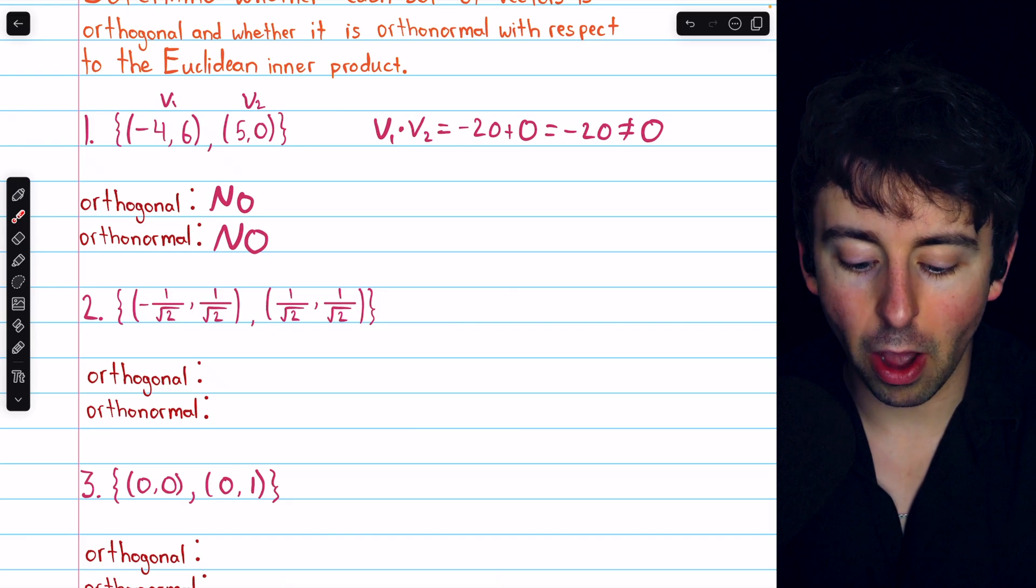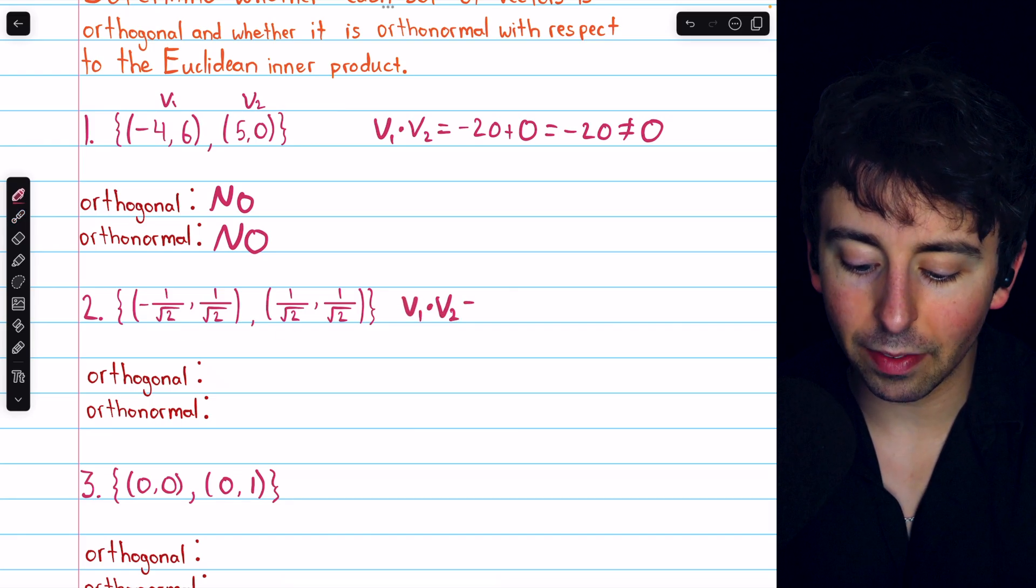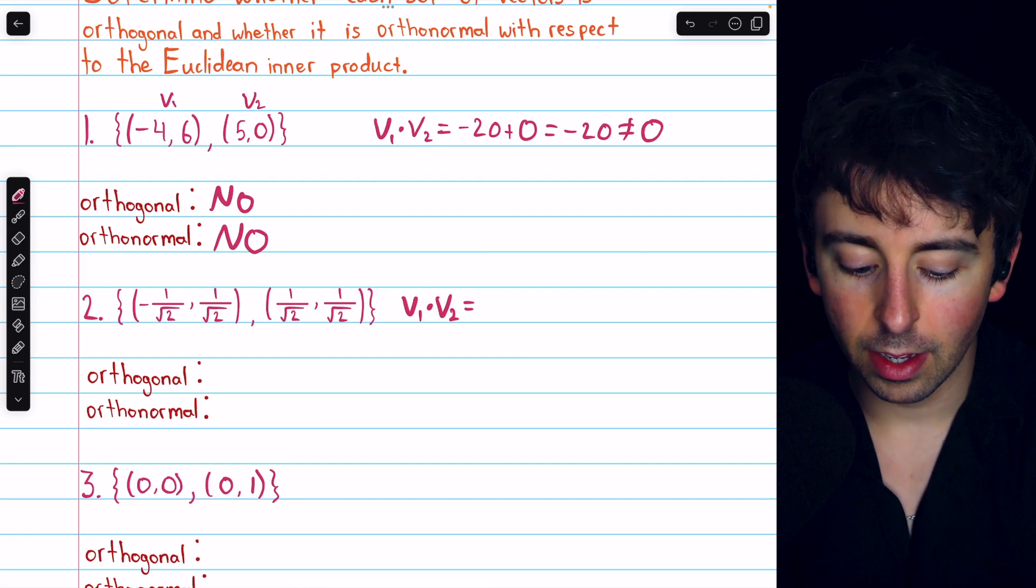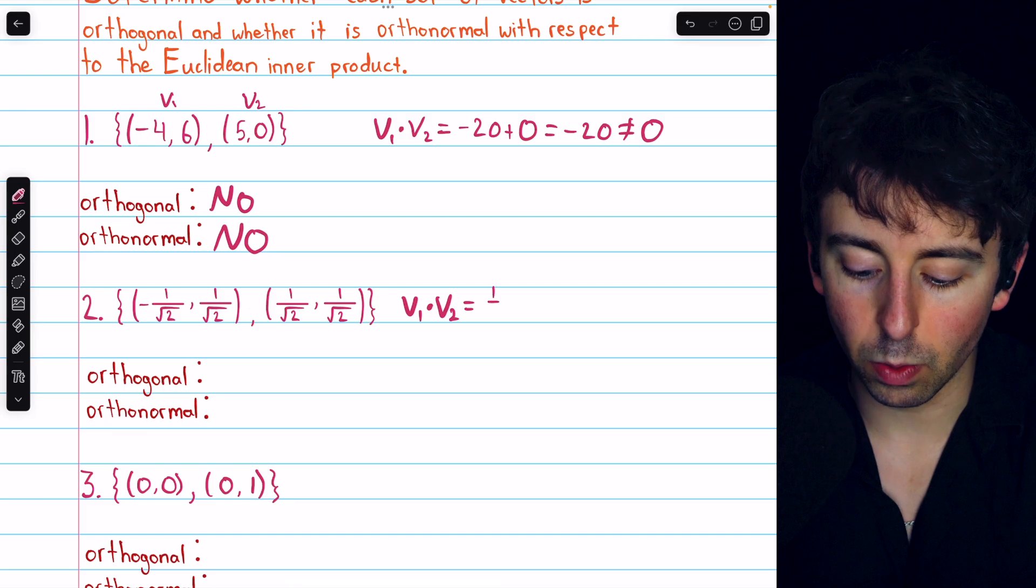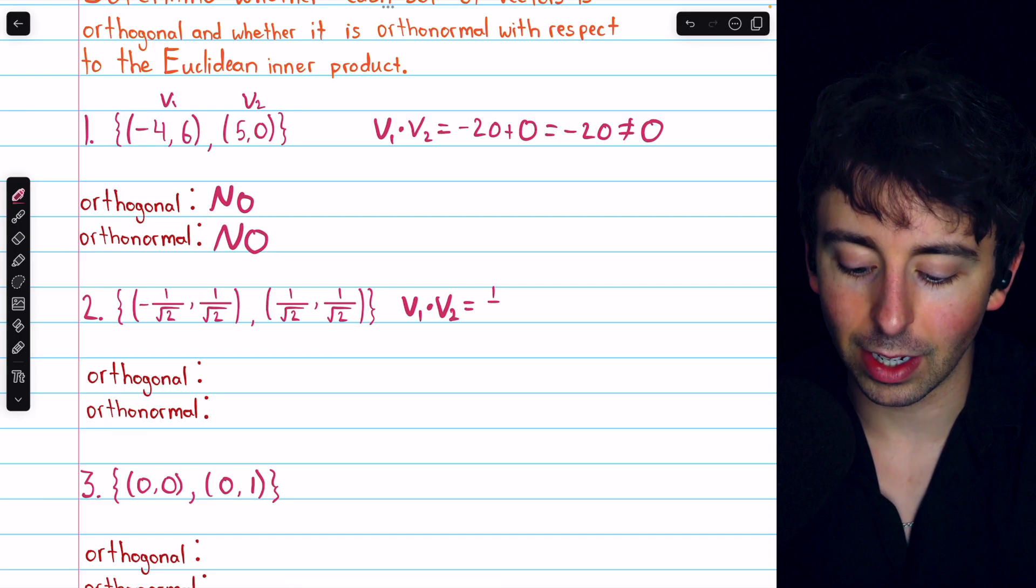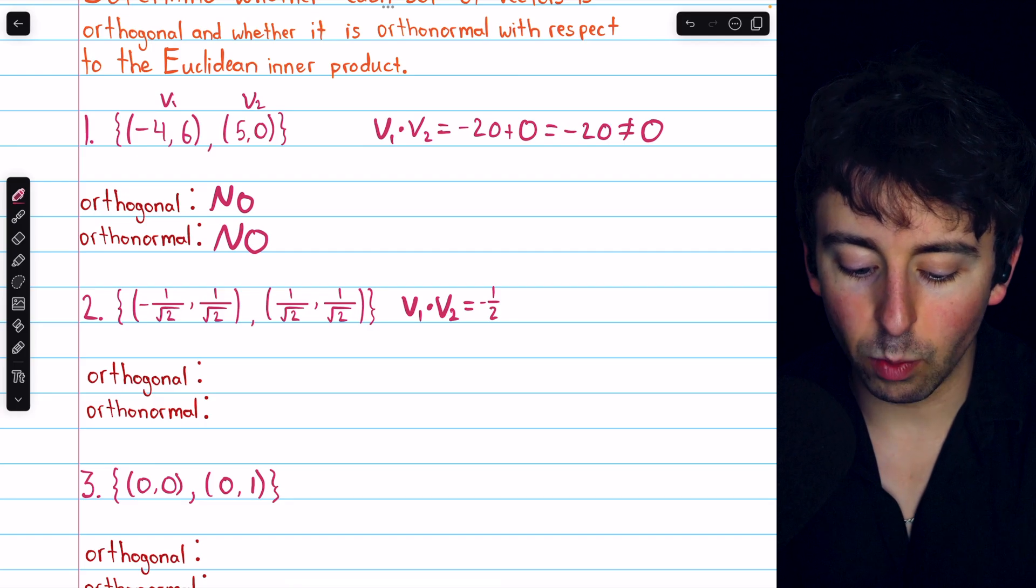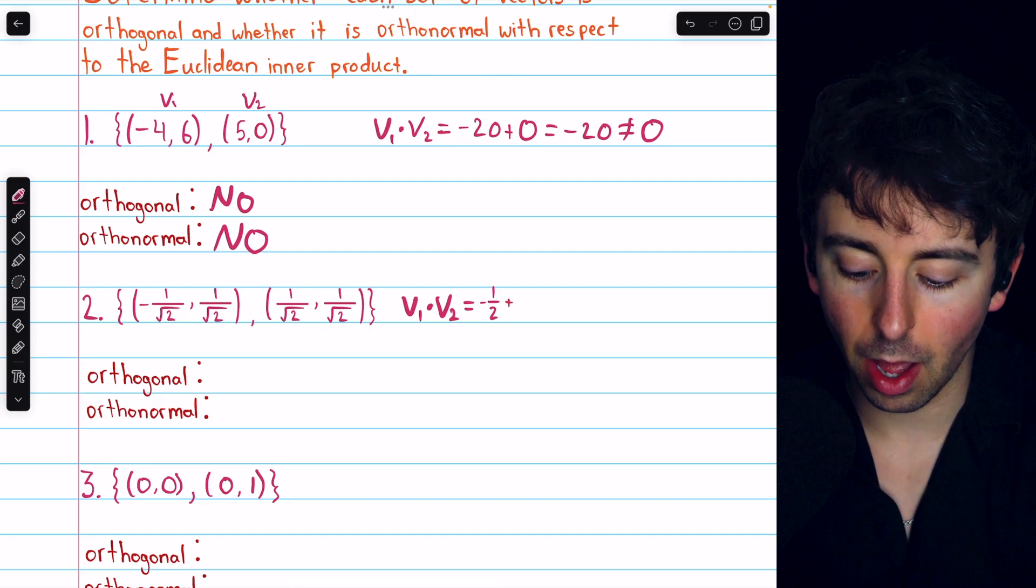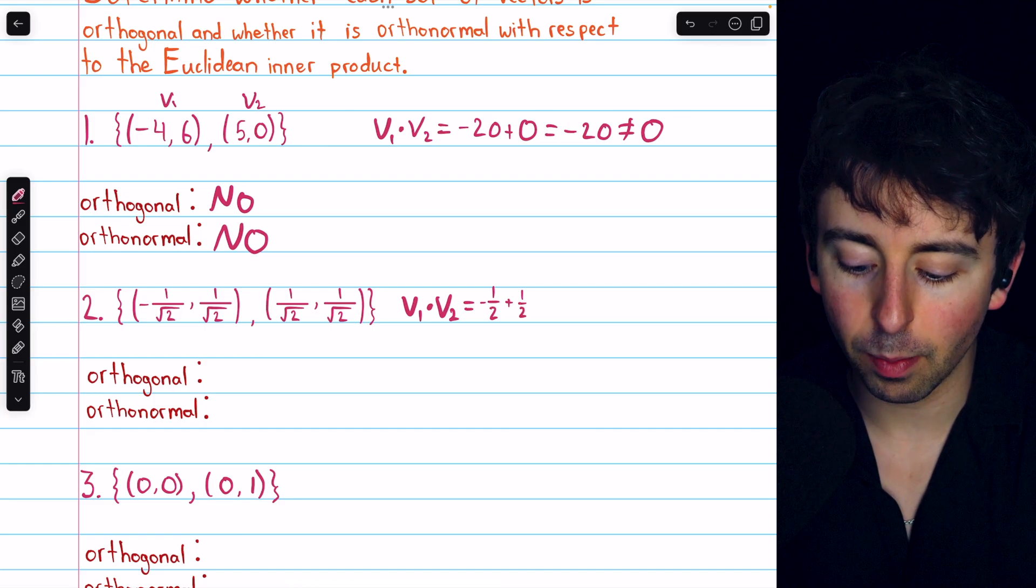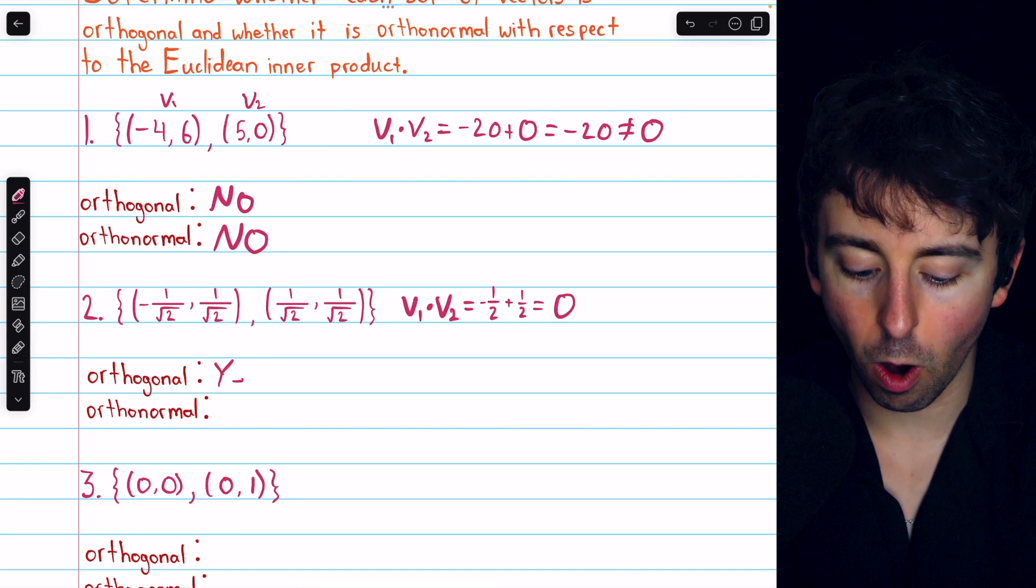Let's move on to problem two. Are these two vectors orthogonal? Well, if again we call them v1 and v2, we would have to compute the dot product, so negative 1 over root 2 times 1 over root 2. The root 2s would cancel out and just leave a 2 in the denominator, and it's negative. And then we would have 1 over root 2 times 1 over root 2, which is the same thing, but positive. So negative 1 half plus 1 half, this is 0, and so these two vectors are orthogonal.